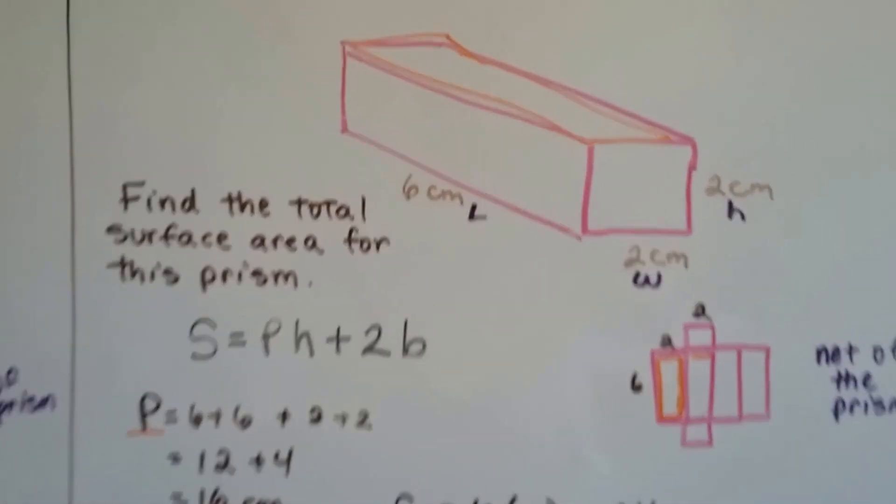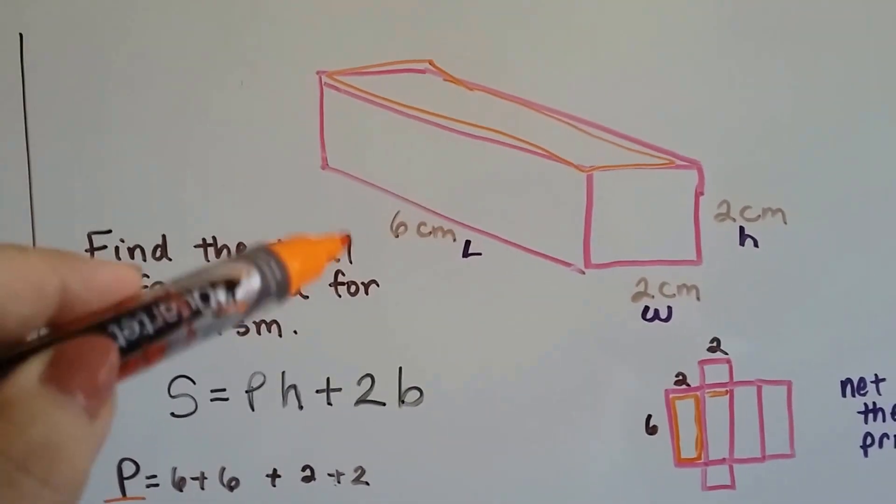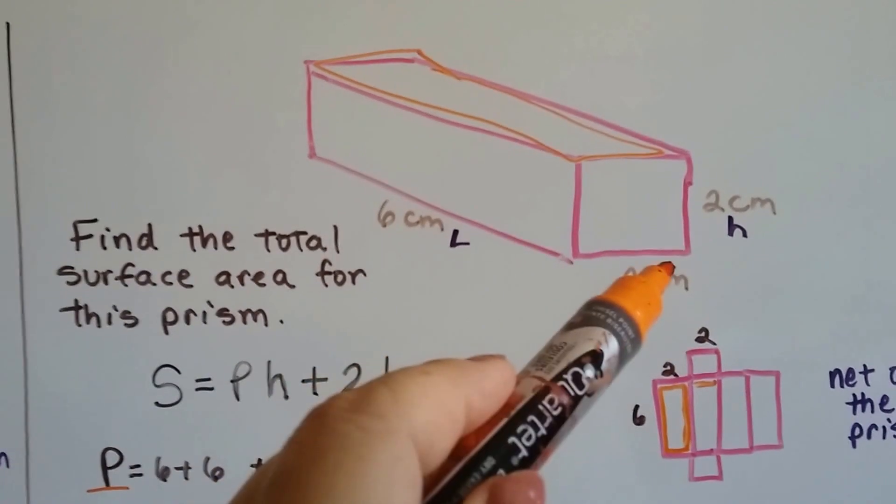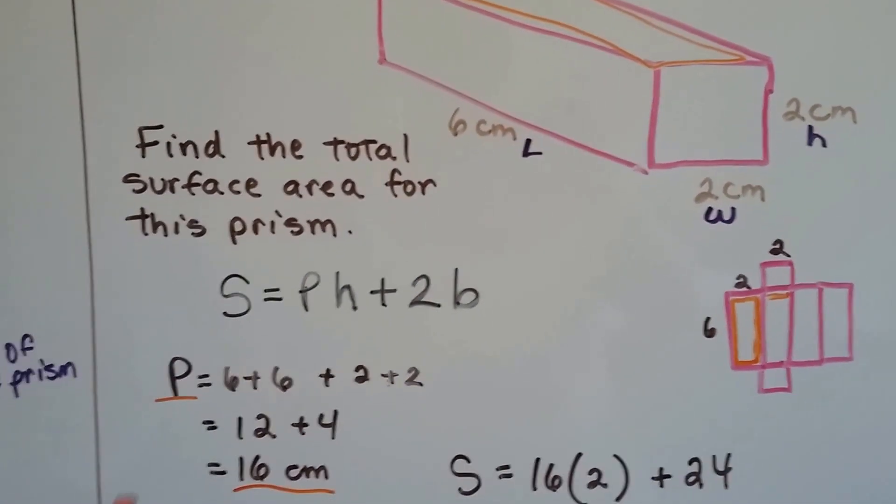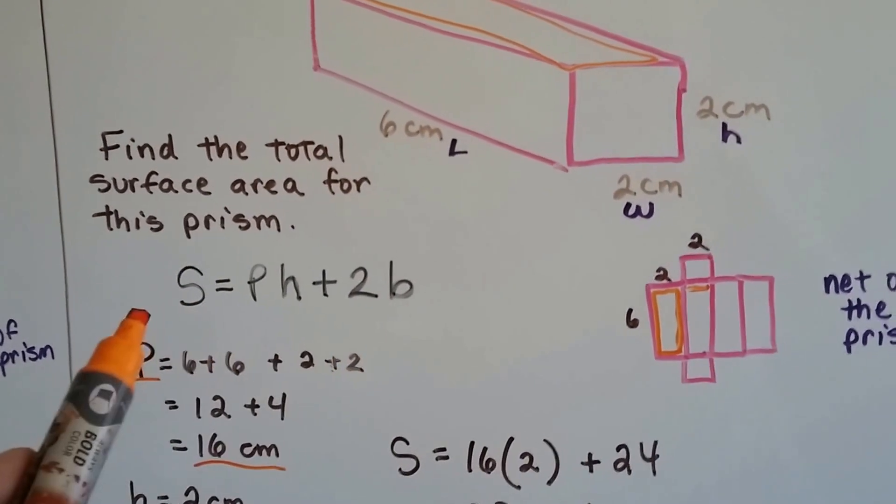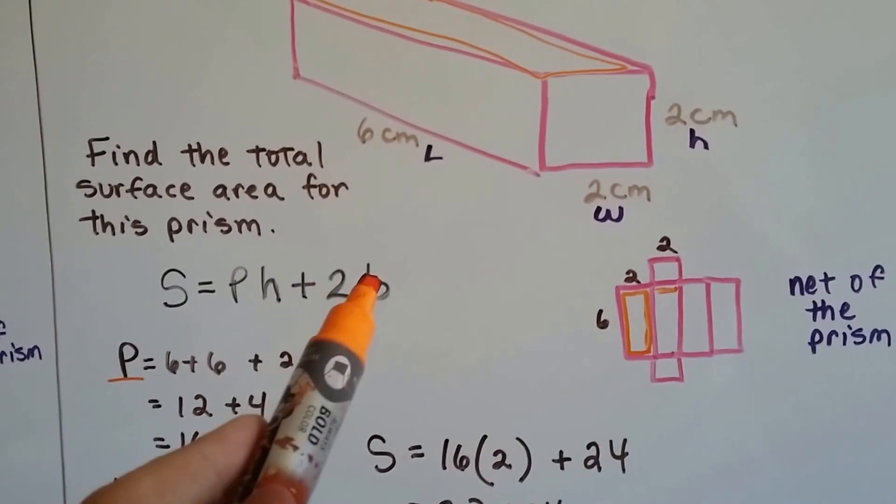Now, look at this figure. It looks like a stick of butter. Can you see the perimeter right here on top in orange? This is 6 centimeters long, 2 centimeters wide, and 2 centimeters high. To find the total surface area for this prism, we're going to use this formula. Surface area equals the perimeter times the height plus the two bases.